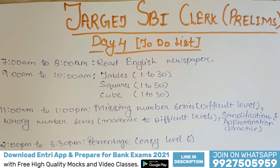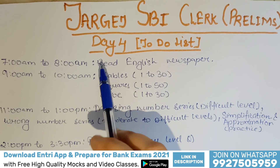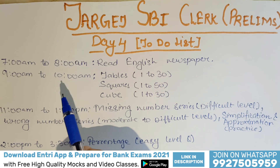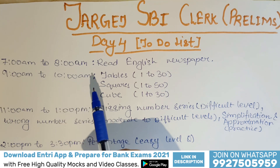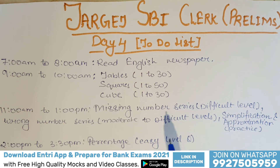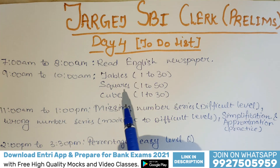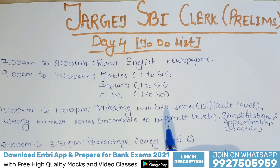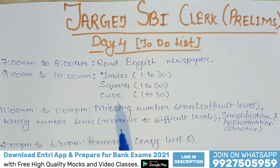Now let's discuss the Day 4 to-do list for SBI Clerk Prelims. From 7am to 8am, you have to read an English newspaper — as I always say, this enhances your vocabulary. Then from 9am to 10am, tables 1 to 30, squares 1 to 50, and cubes 1 to 30 — memorize these very thoroughly, as this will help increase your speed in the quantitative aptitude section.